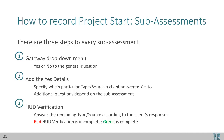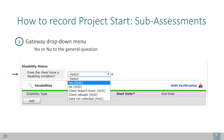Let's see how to do this in HMIS. First, the gateway question — we'll use disabling condition as an example. Here, the general question is: does the client have a disabling condition? The response will usually be yes or no. Of course, client doesn't know, client refused, and data not collected are also possible, but these responses don't help us understand the client's situation.